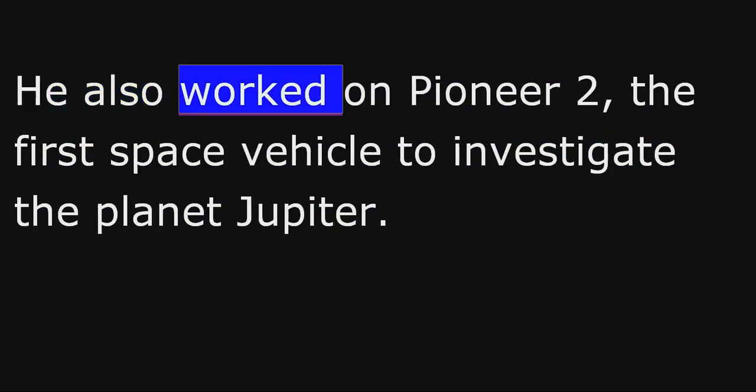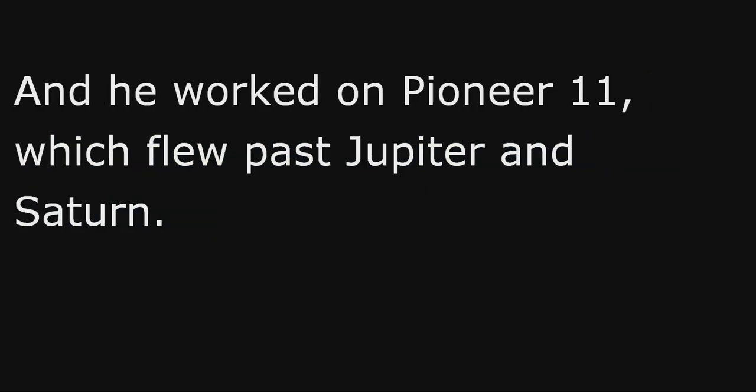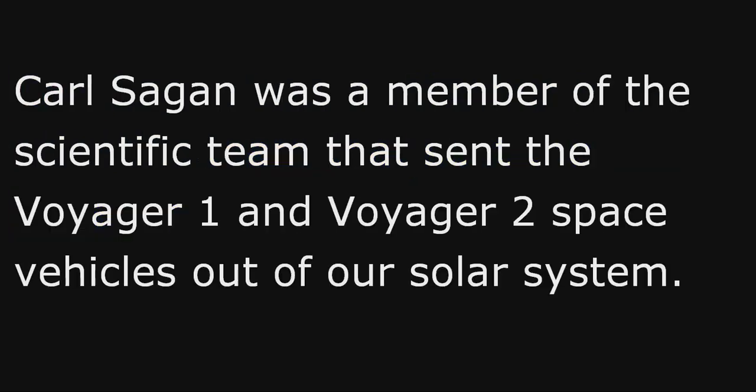He also worked on Pioneer 2, the first space vehicle to investigate the planet Jupiter. And he worked on Pioneer 11, which flew past Jupiter and Saturn. Carl Sagan was a member of the scientific team that sent the Voyager 1 and Voyager 2 space vehicles out of our solar system.